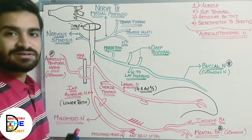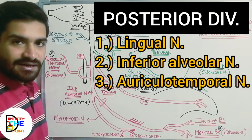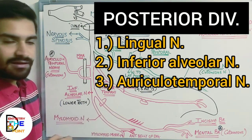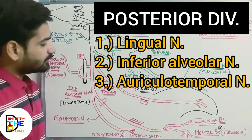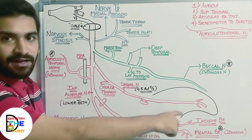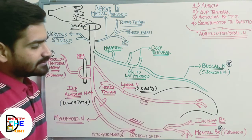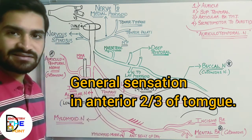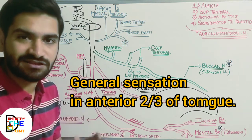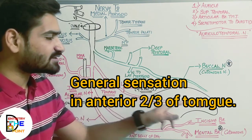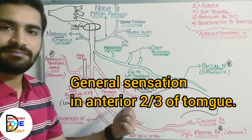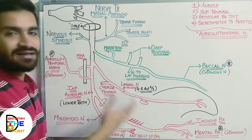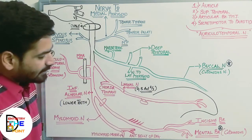Moving on to the branches of the posterior division — there are three branches. The first is the lingual nerve, the second is the inferior alveolar nerve, and the third is the auriculotemporal nerve. The lingual nerve supplies general sensations to the anterior two-thirds of the tongue. It provides only general sensations — not special sensations like taste — from the anterior two-thirds of the tongue.